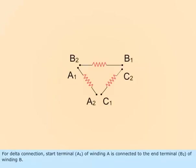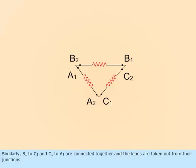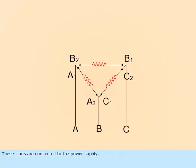For delta connection, start terminal A1 of winding A is connected to the end terminal B2 of winding B. Similarly, B1 to C2 and C1 to A2 are connected together, and the leads are taken out from their junctions. These leads are connected to the power supply.